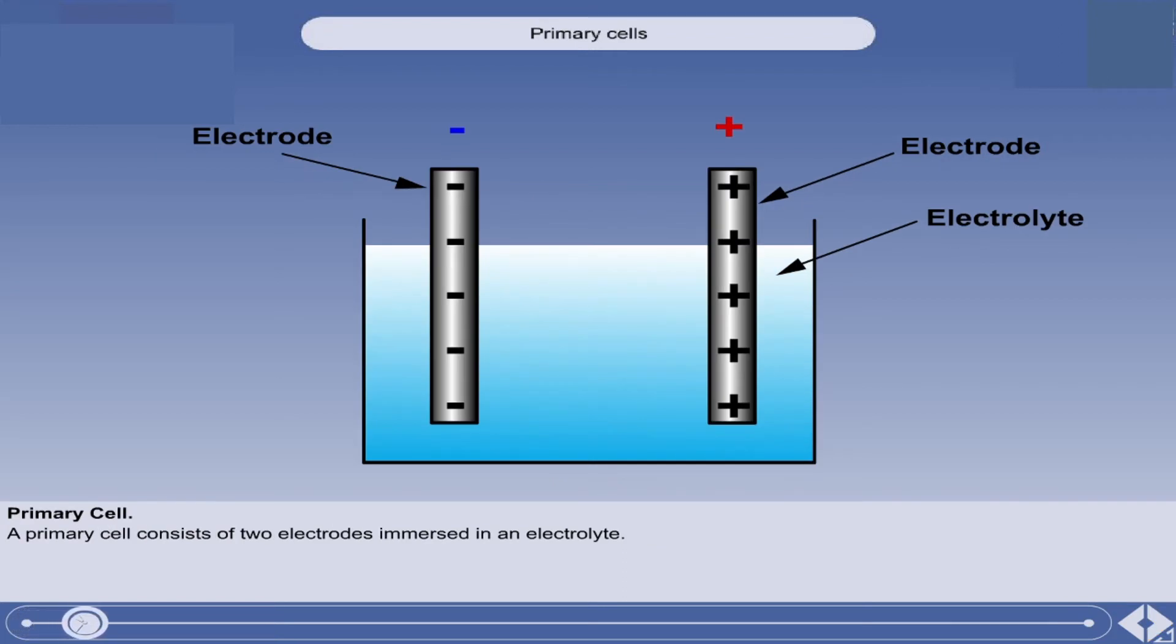A primary cell consists of two electrodes immersed in a chemical called an electrolyte. The electrolyte encourages electron transfer between the electrodes until there is a potential difference between them.